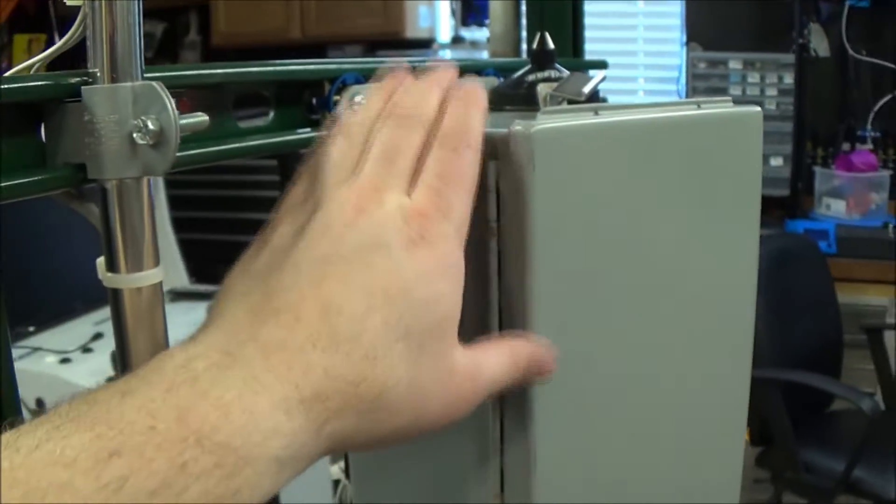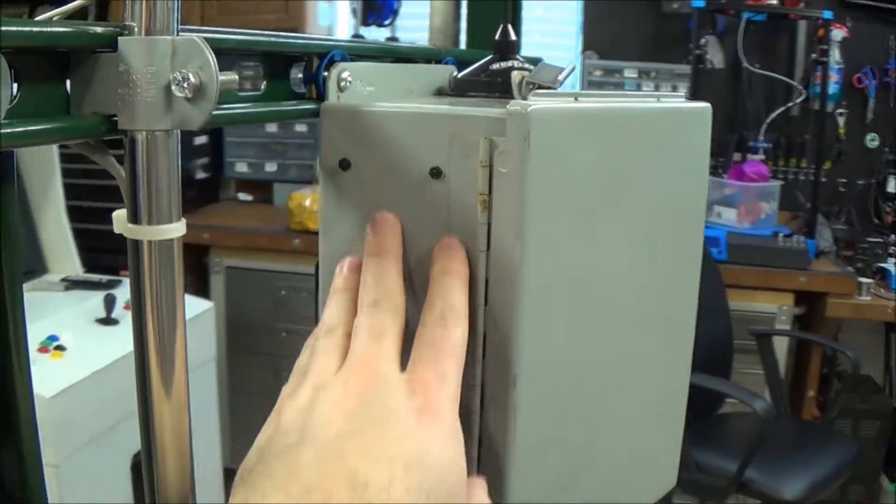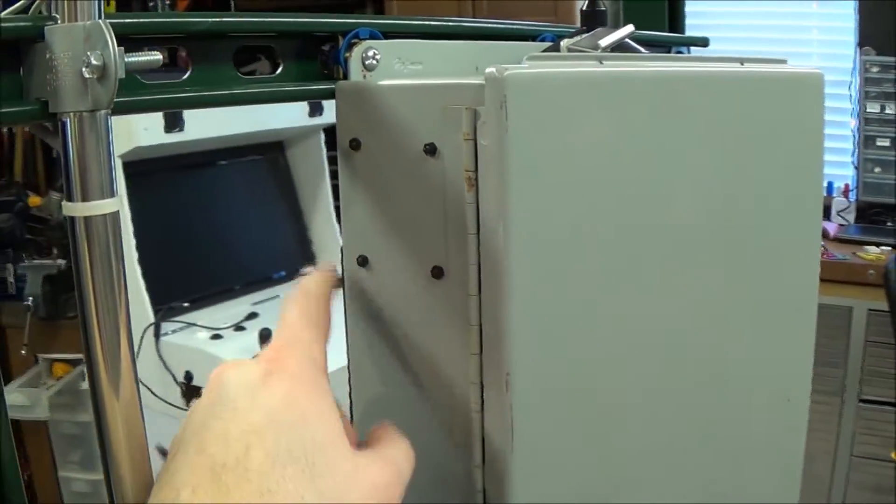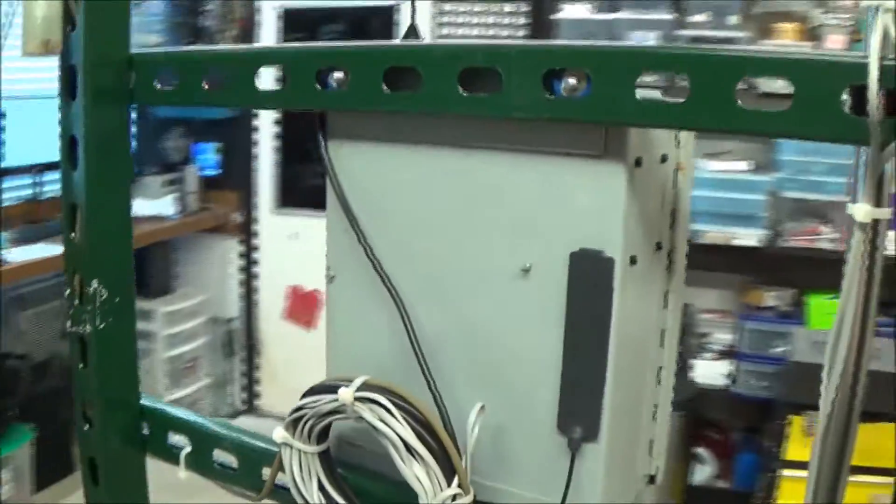You can get an enclosure based on your needs. This is NEMA 4. You really aren't supposed to drill holes in it if you want it to be completely waterproof.